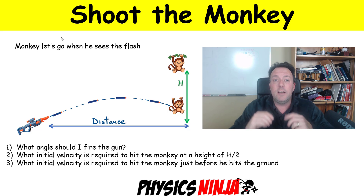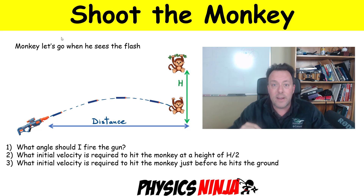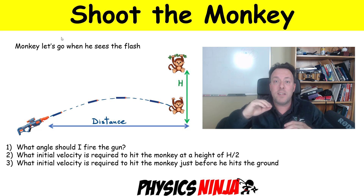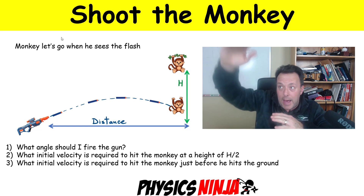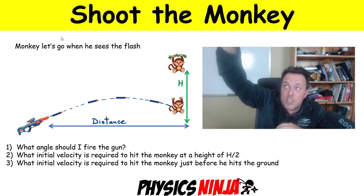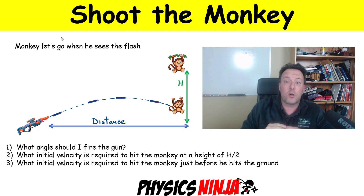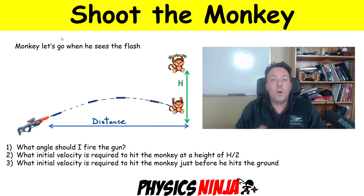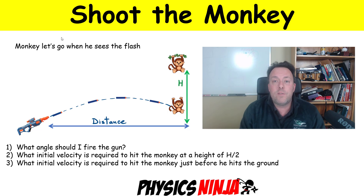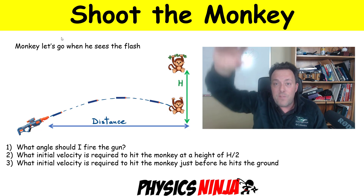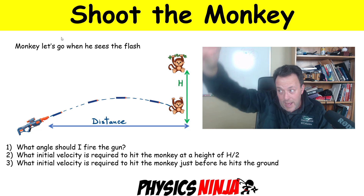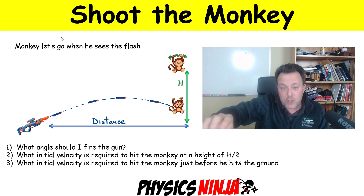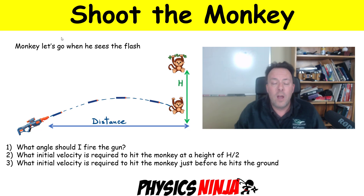Question two says: what is the initial velocity that's required if I wanted to hit the monkey halfway between its starting point and the ground? And the last one: what would be the initial velocity that would be required if I want to hit it as it's falling just before it hits the ground?